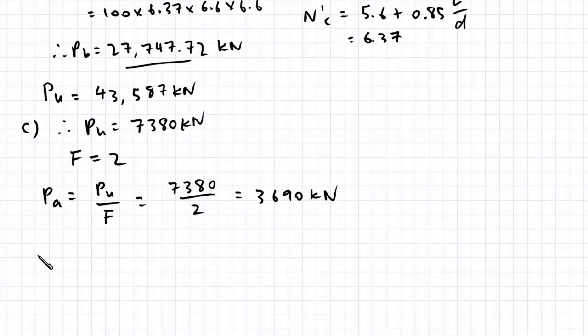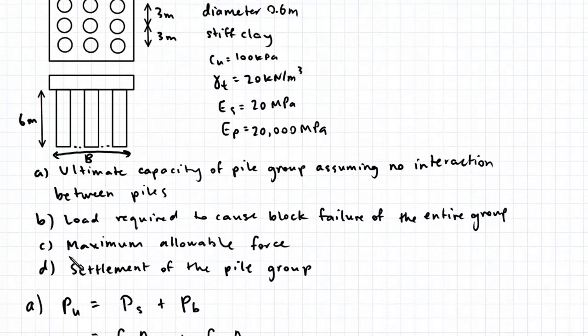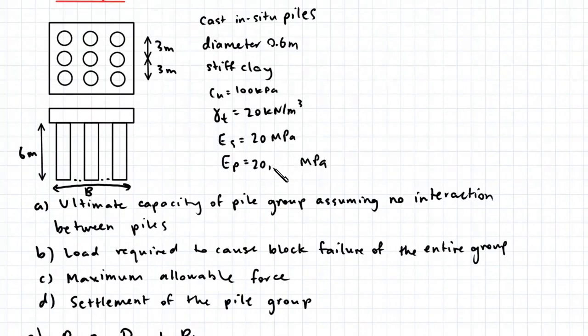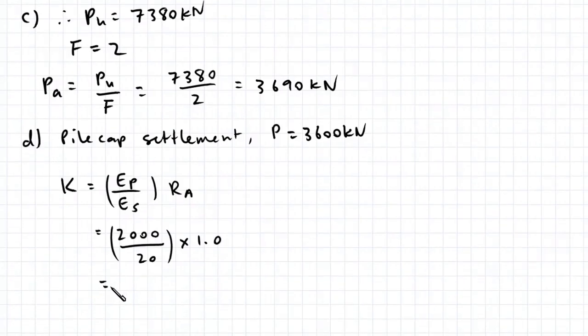Finally for part D, we want to determine the settlement if a load of 3,600 kN is applied. Let's first determine the pile stiffness factor, which is the modulus of the pile divided by the modulus of the soil multiplied by Ra. Ep is 2,000 megapascals divided by 20, and we have solid piles, so Ra equals 1. This is 100.